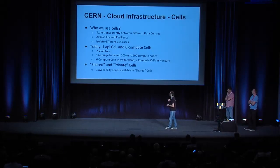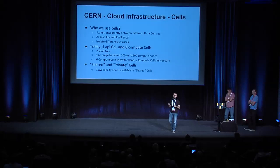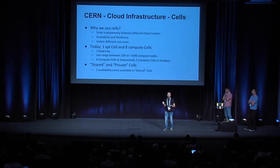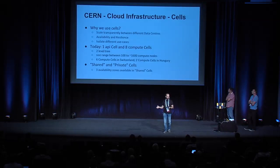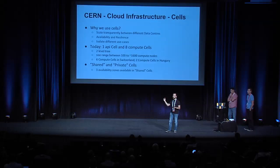Another reason is to isolate different use cases. As a private cloud, we have different use cases and want different, heterogeneous hardware, and we want to spawn instances from special projects on special hardware. Cells is one way to isolate these capabilities. In terms of architecture, we have one API cell and eight compute cells. The size of these cells ranges between 100 compute nodes to 1,600 compute nodes. We believe for us, cells between 200 and 400 compute nodes is the ideal fit.